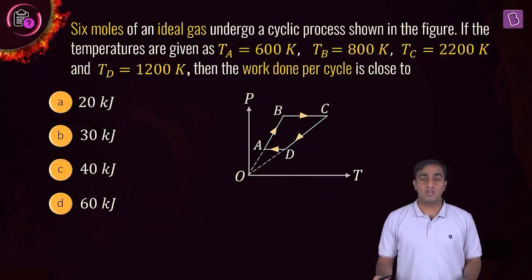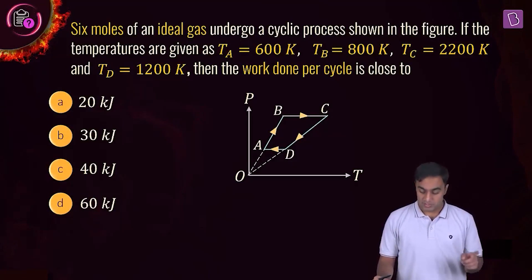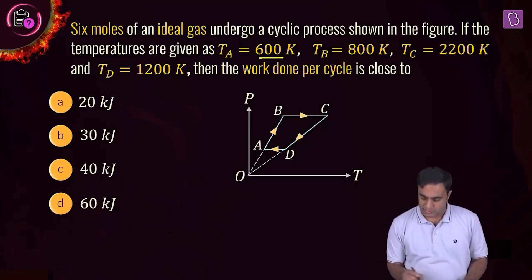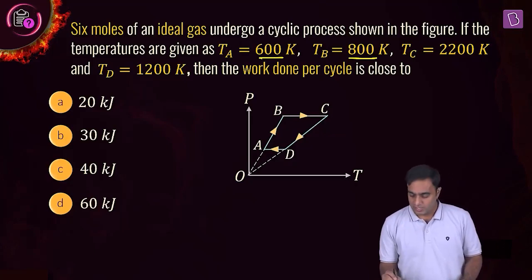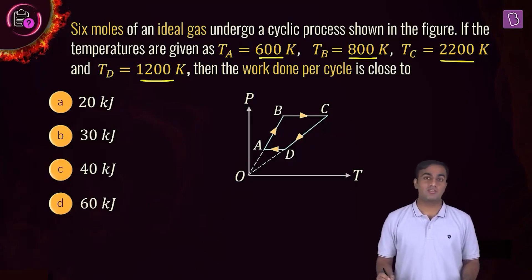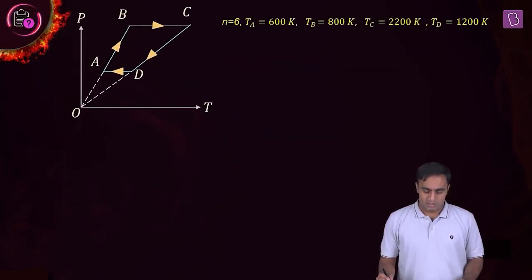The next question is on work done by a gas in a cyclic process. Six moles of an ideal gas undergoes a cyclic process and the corresponding pressure versus temperature graph is given. The temperatures at the end of each step are: state A = 600 K, state B = 800 K, state C = 2200 K. We are supposed to find the net work done per cycle.